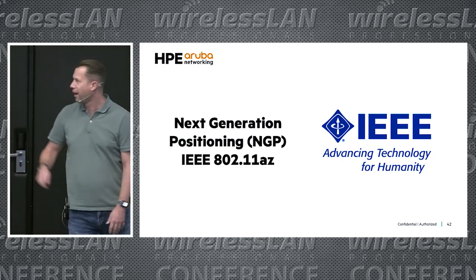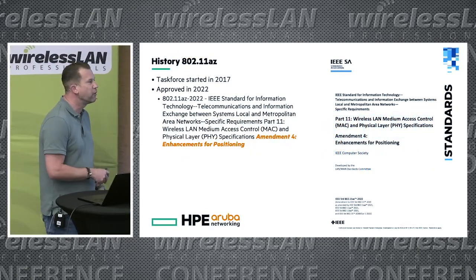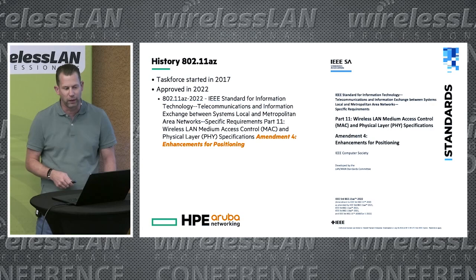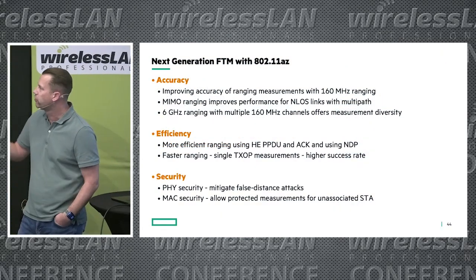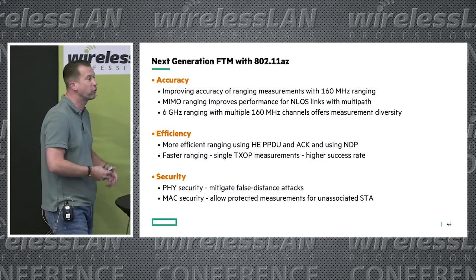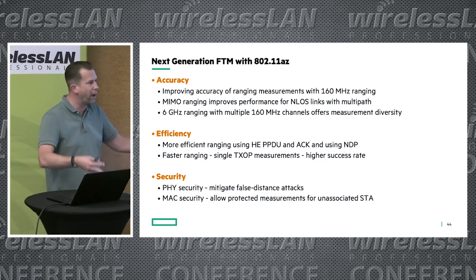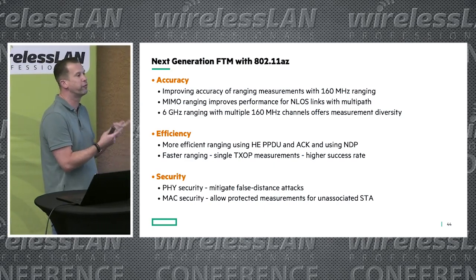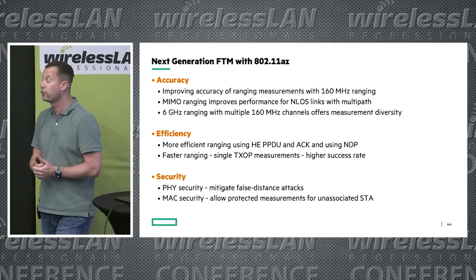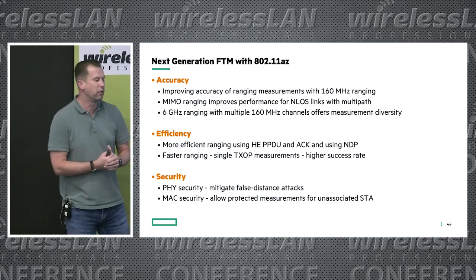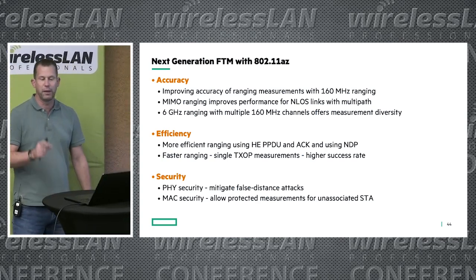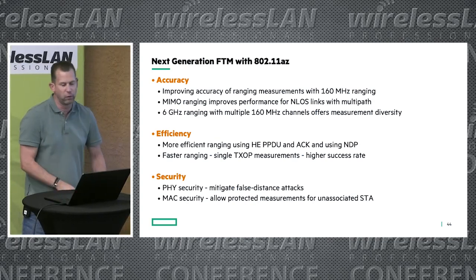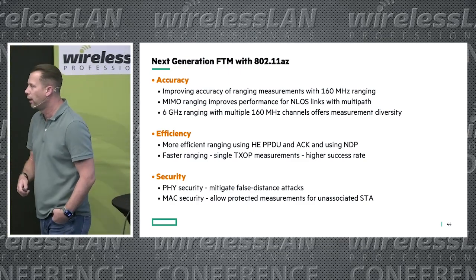Now the next generation: AZ. This is amendment 4, downloadable from IEEE. The focus areas are: first, accuracy — more bandwidth means more accurate locationing; MIMO ranging is included, giving better performance for non-line-of-sight links; 6 GHz support; efficiency through a single TXOP to share multiple measurements instead of multiple sessions; and finally, security is added.